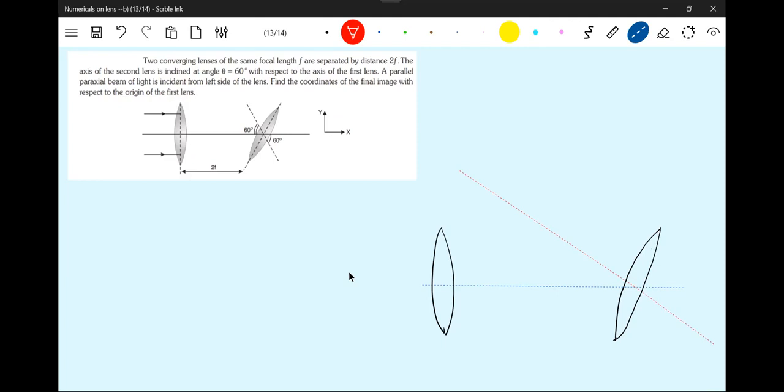60 degree it is inclined. The ray is incident. This is P1. This angle is 60 degree. Focal length is F for both.